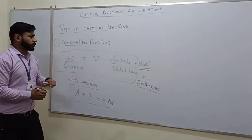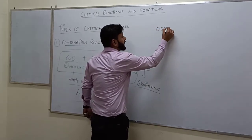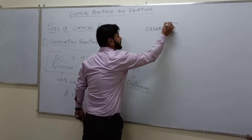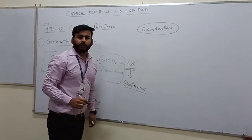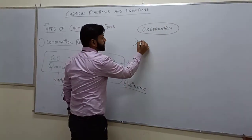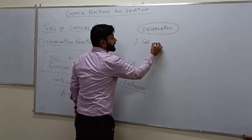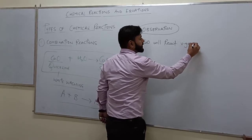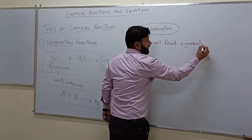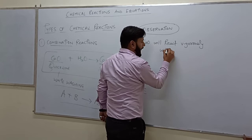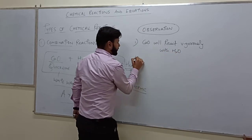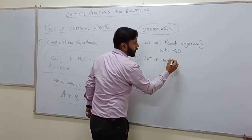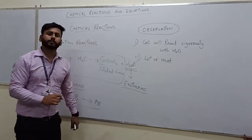Moving on — whenever any activity is done, you will be asked: what is your observation? The first observation will be CaO will react vigorously with water. Vigorously means the reaction will be very, very fast. Along with that, a lot of heat will be generated. So these are the two basic observations you will observe in this particular reaction. Again, it is used for white washing.